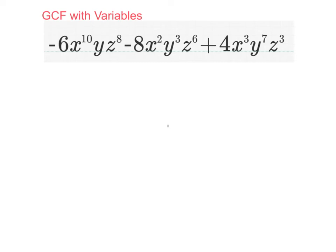For the number part, negative 2 is the GCF. I chose negative 2 instead of just positive 2, so that the first term inside the parentheses would be positive. For the variable x, the highest number of factors of x that all terms contain is x squared. For y, y to the 1st is the highest for all terms, and z cubed is the highest.